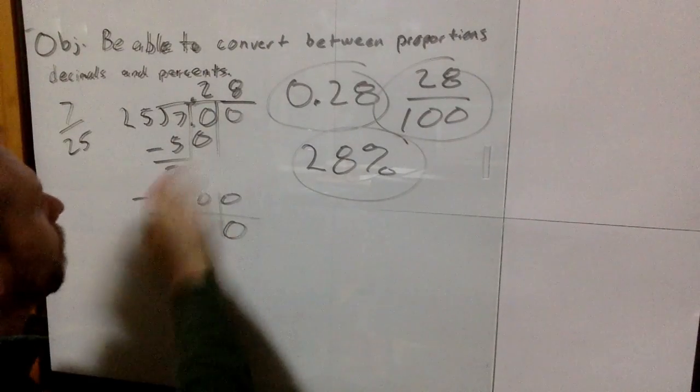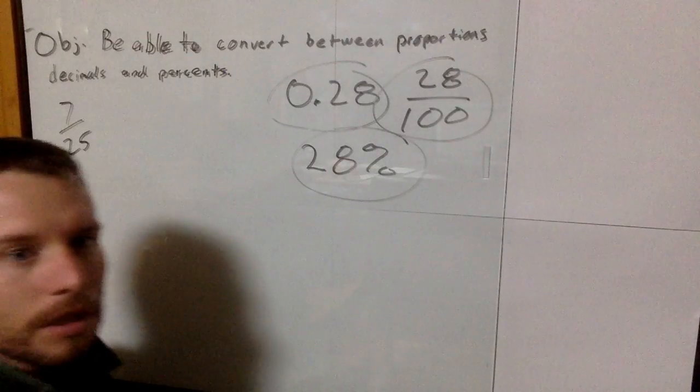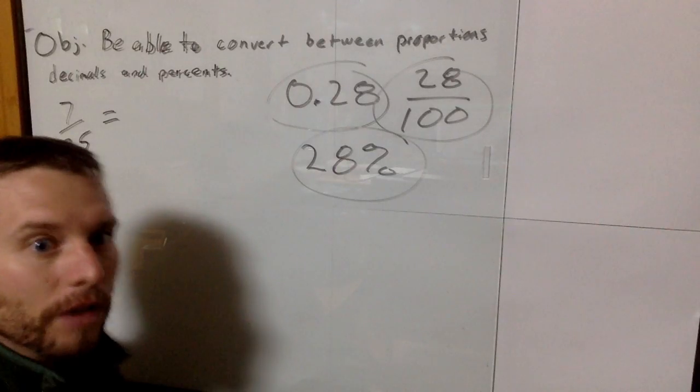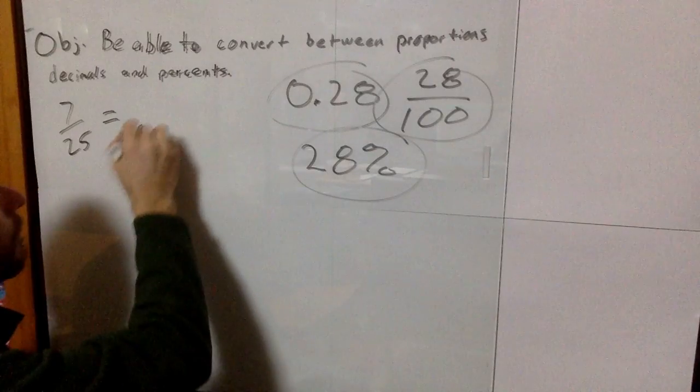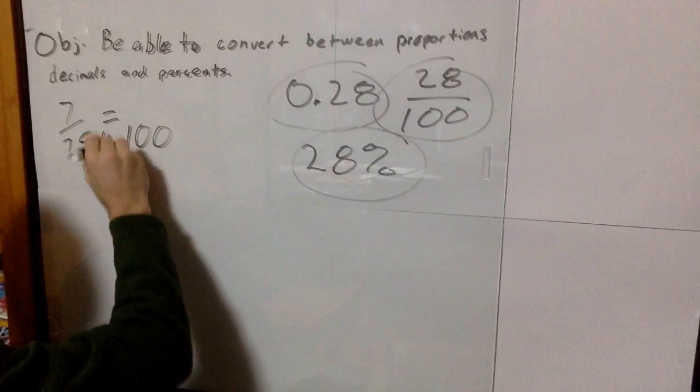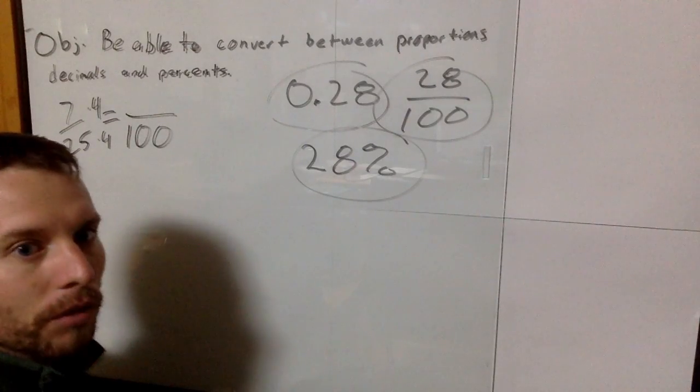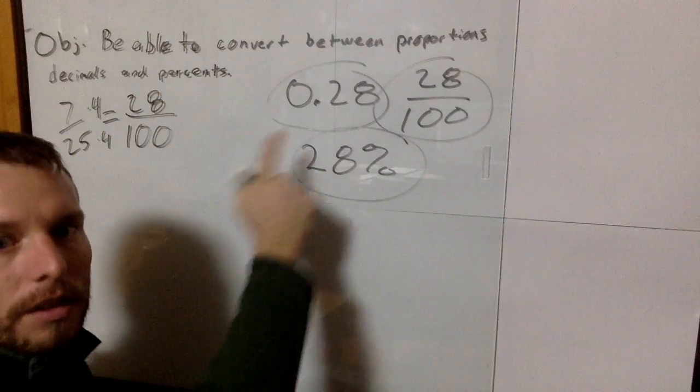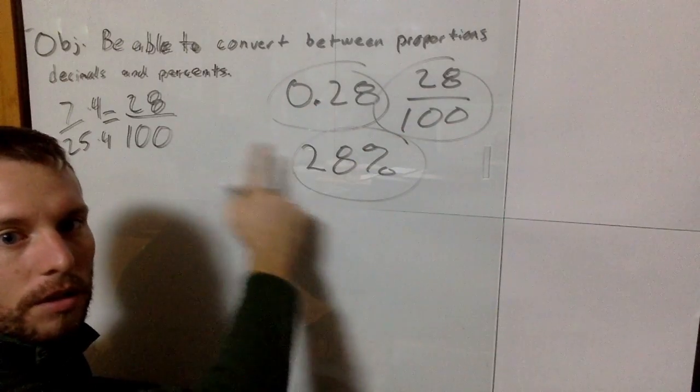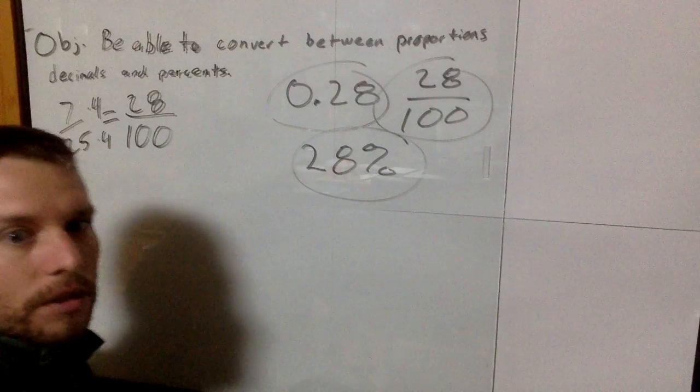Real quick, another way to have done this problem a little bit faster, and you can't always do this, but sometimes you will be able to see this, is that we can use proportions to make this an equivalent fraction. So we want to get it out of 100 to convert it to percents. And so in order to do that, we can multiply the top and the bottom by 4. So if we did 25 times 4, we would get 100, and then 7 times 4, we would get 28. And then you can see how this is also 28 hundredths, and this is also 28 out of 100, or 28%.